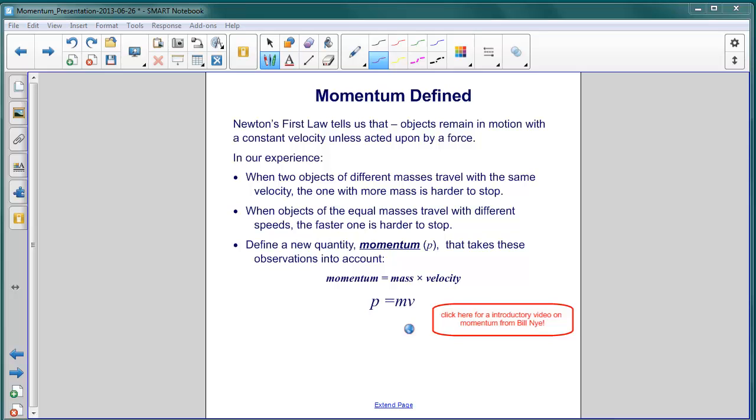So the difficulty stopping an object, that is, changing its velocity, is dependent both on the mass and the velocity. So we combine these two and define this quantity called momentum.